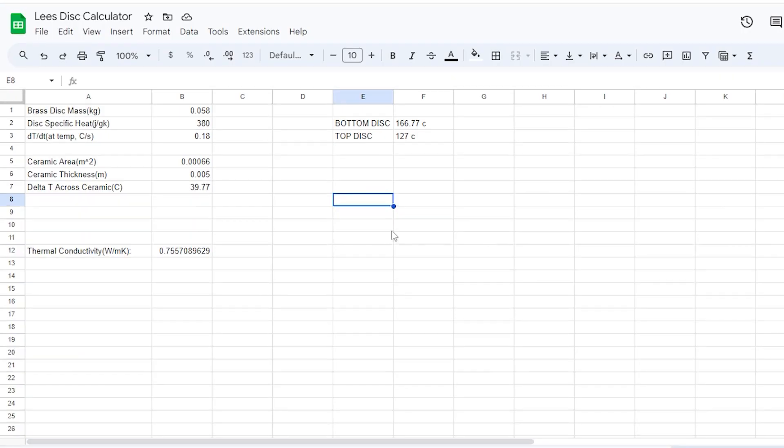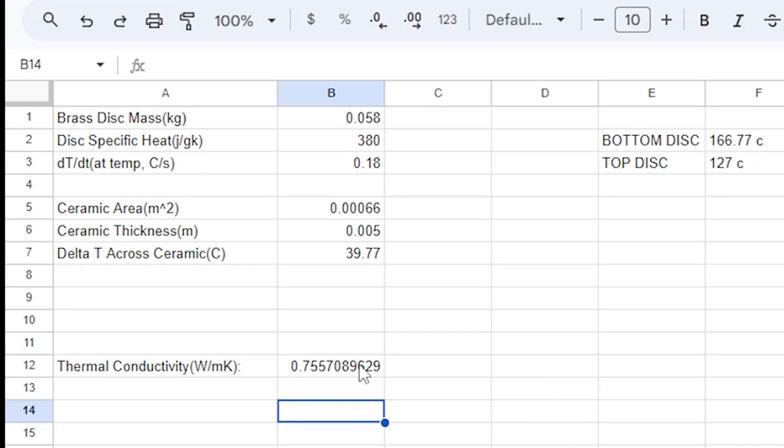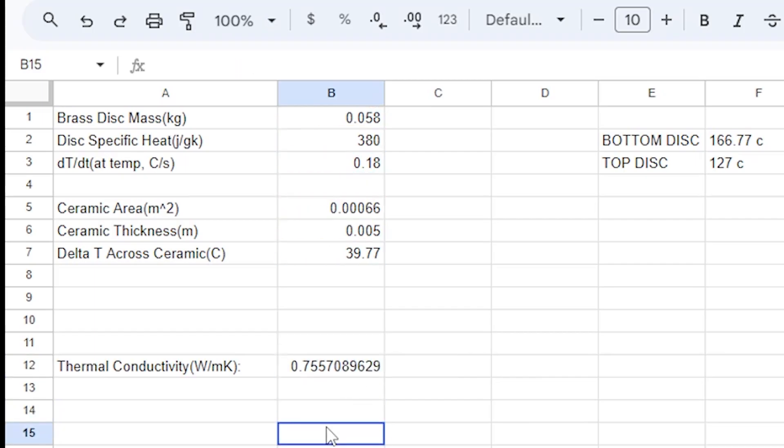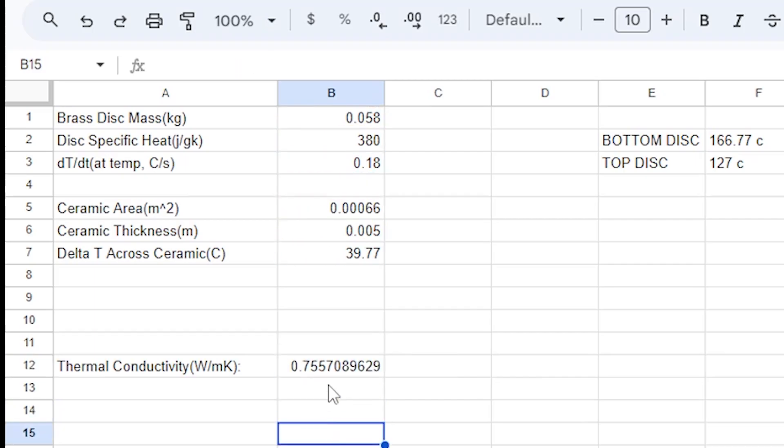This is some spreadsheet math for the experiment we just did. So we've got the bottom disk temperature and the top disk temperature. Now the top disk temperature is what we need to use to find the cooling rate at that specific temperature, which in this case is 0.18 degrees Celsius per second. So we also have the disk specific mass, the brass disk mass, the ceramic area, ceramic thickness, and the delta T across the ceramic. This leads to a thermal conductivity of 0.755 watts per meter Kelvin.